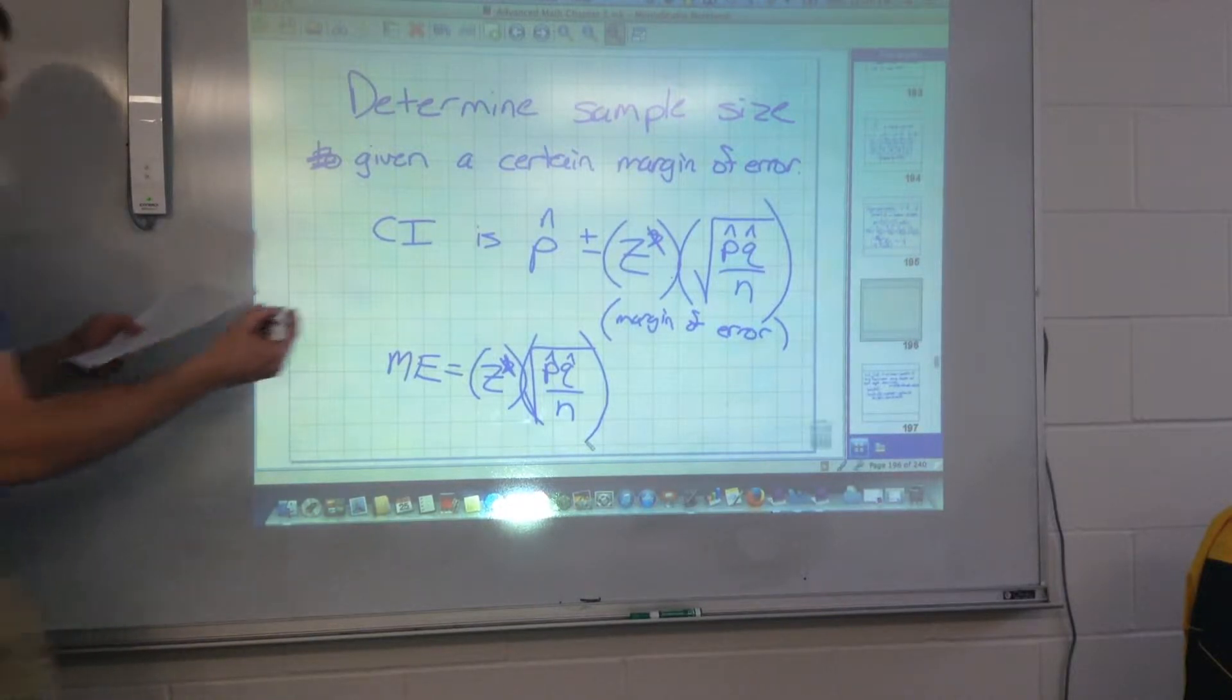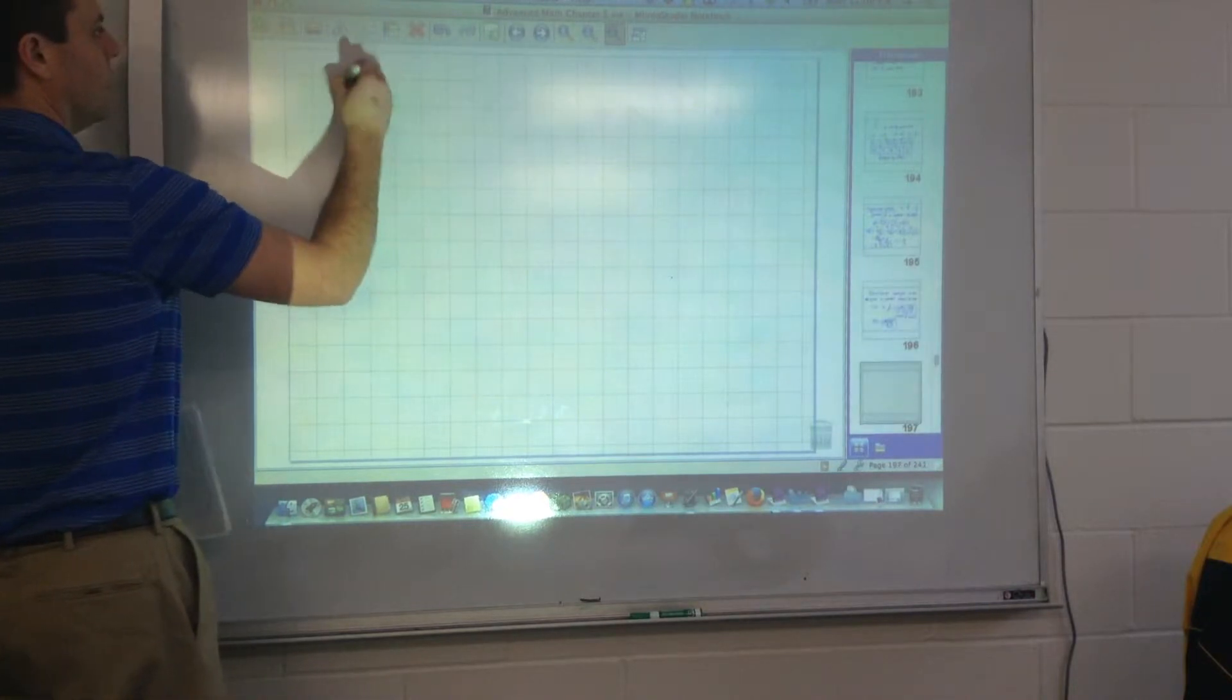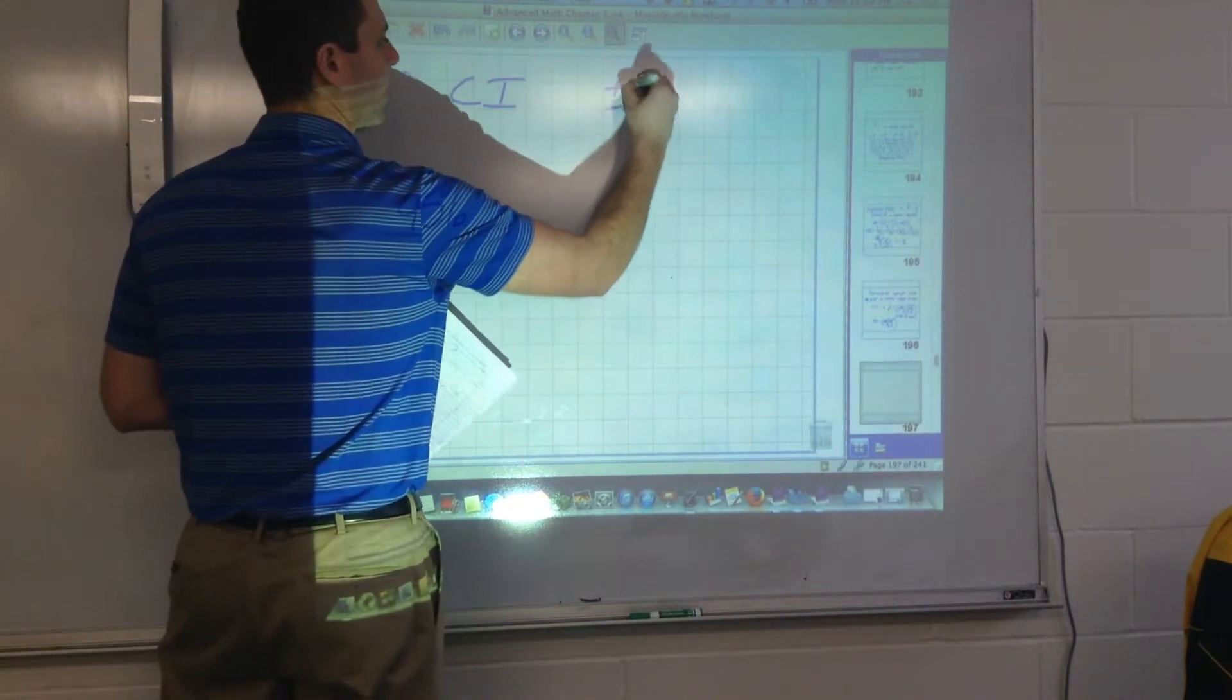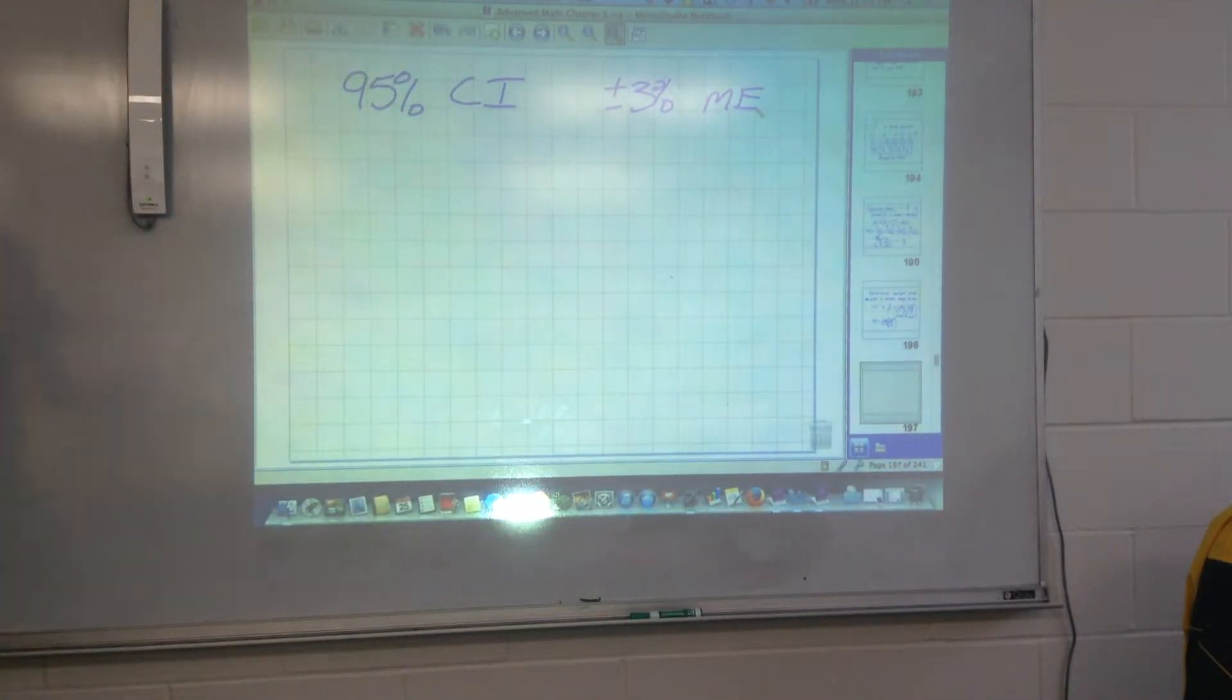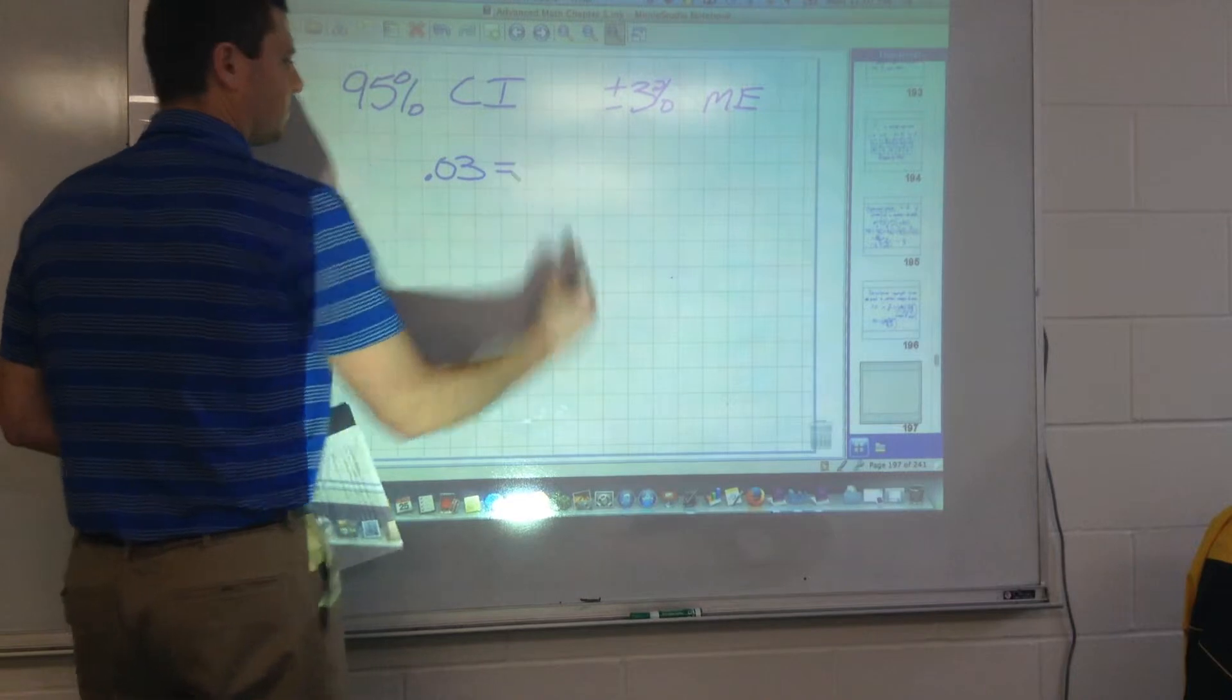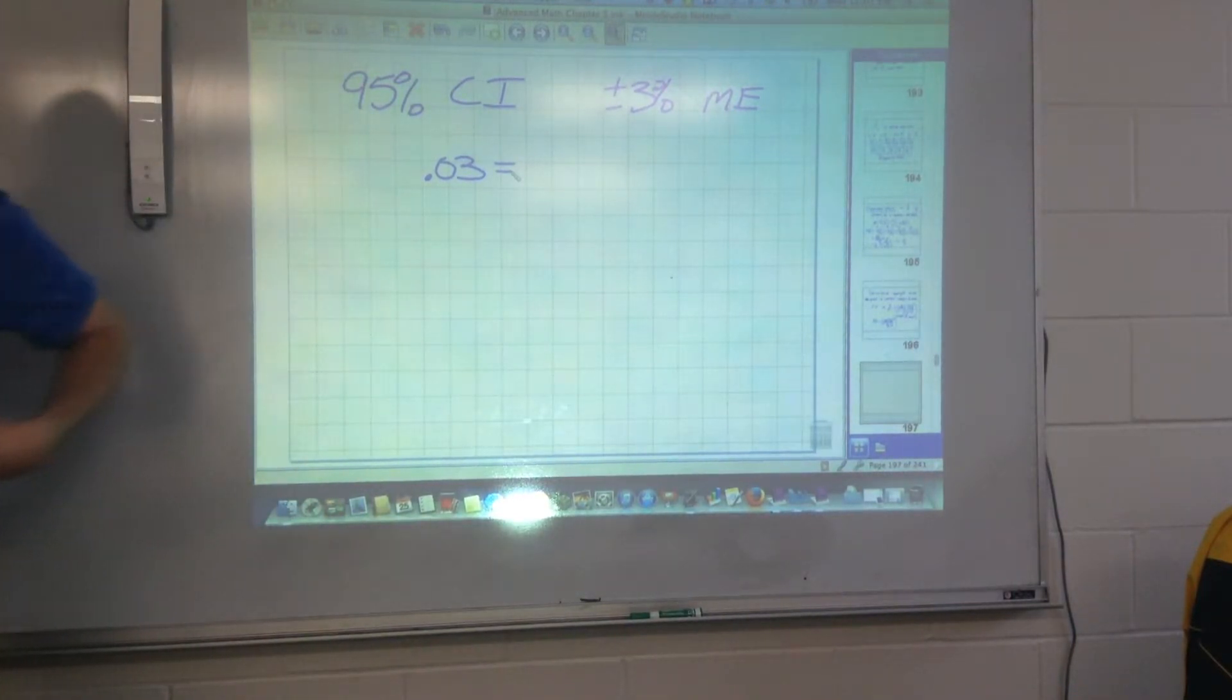So let's go ahead and say we want to use this right here. So we want a 95% confidence interval, like we said there, 95% confidence interval, and we want a plus or minus 3% for our margin of error. Let's say that's what we want to report when we report this statistic out. So your margin of error was 3%, so 0.03.